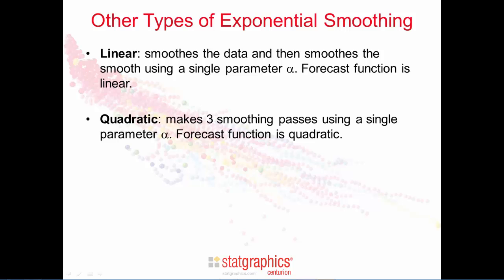Quadratic exponential smoothing makes three smoothing passes. It smooths the data, then smooths the smooth, then smooths the smooth of the smooth. It uses a single smoothing parameter alpha. For quadratic exponential smoothing, the forecast function is quadratic.